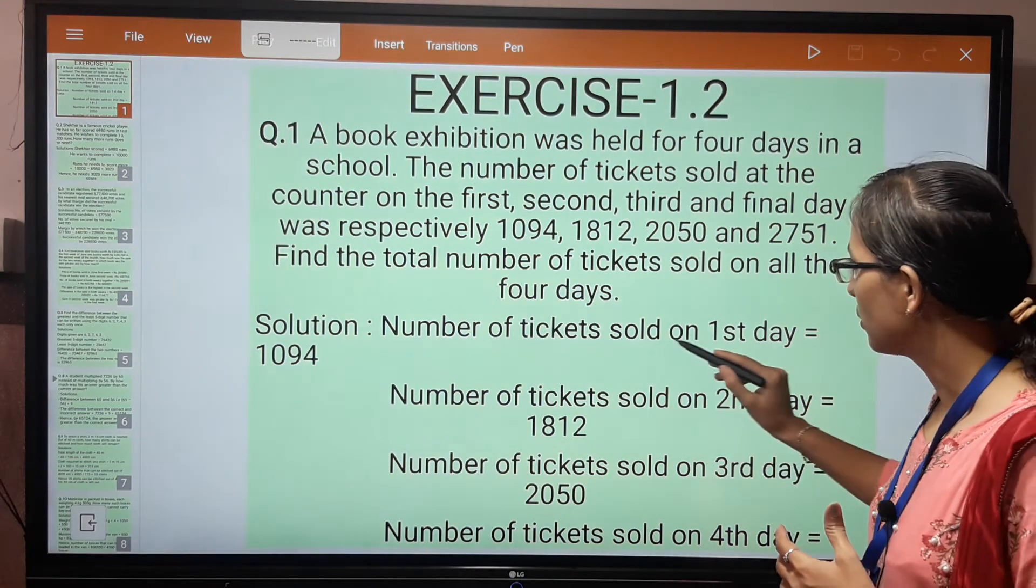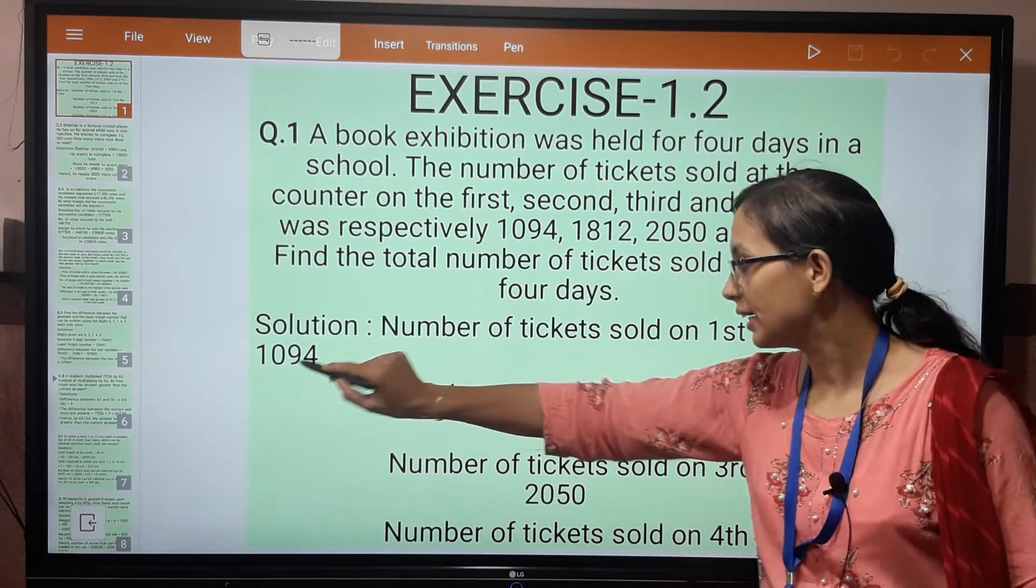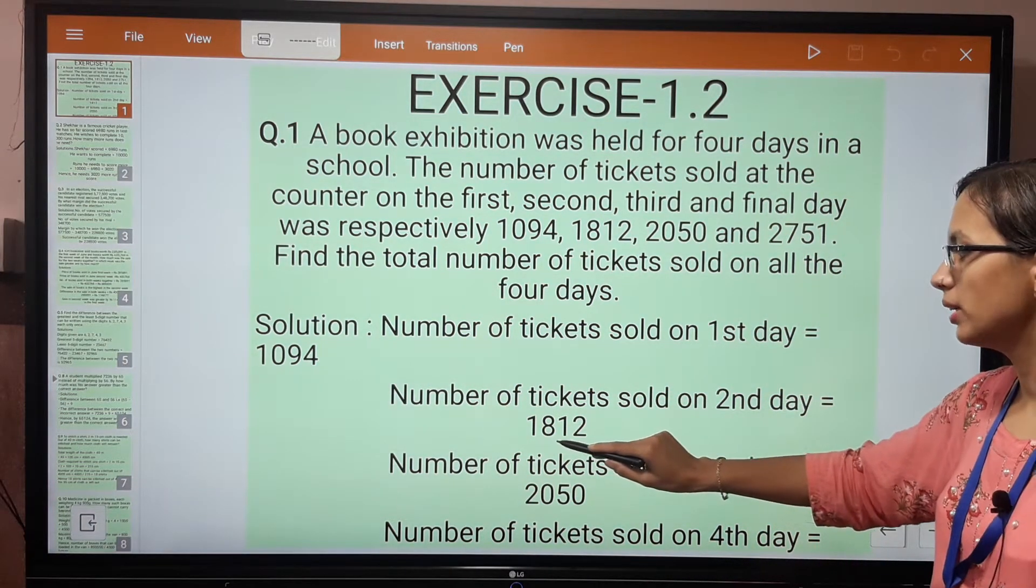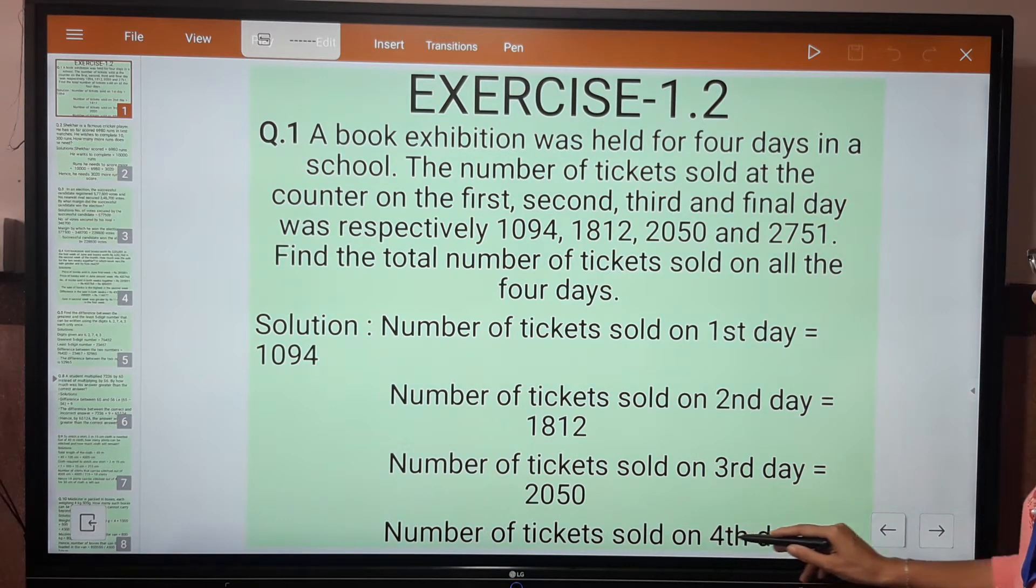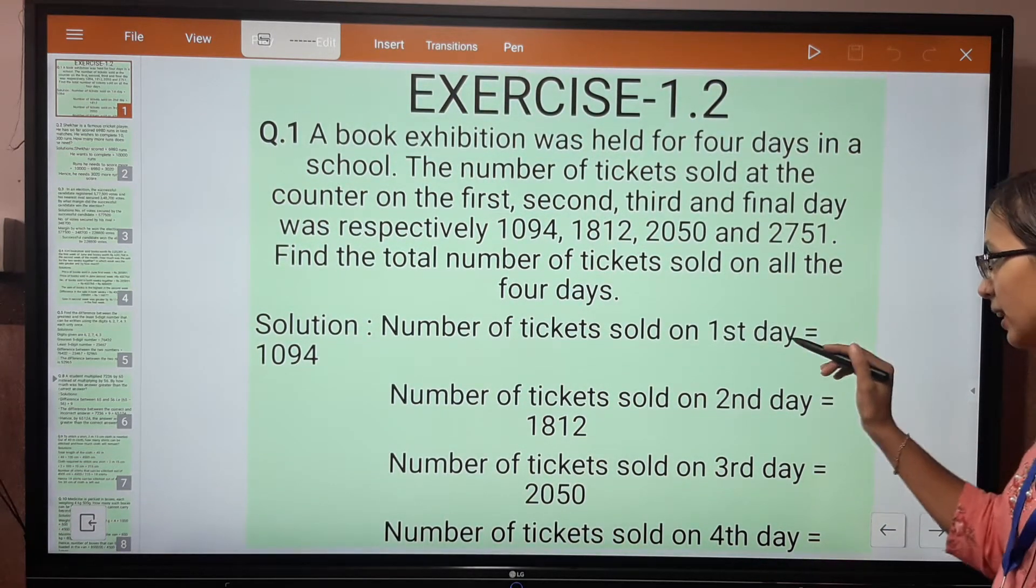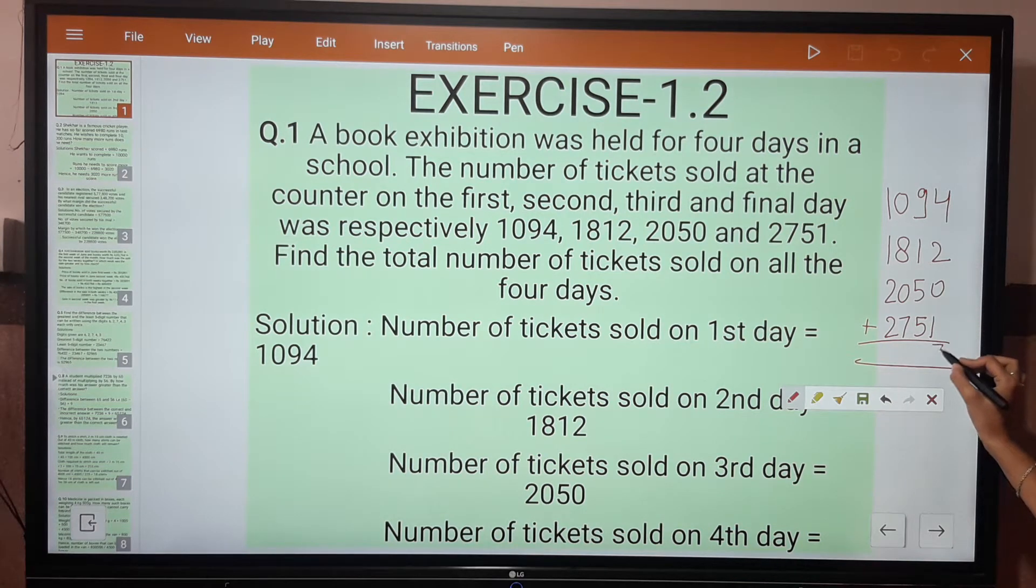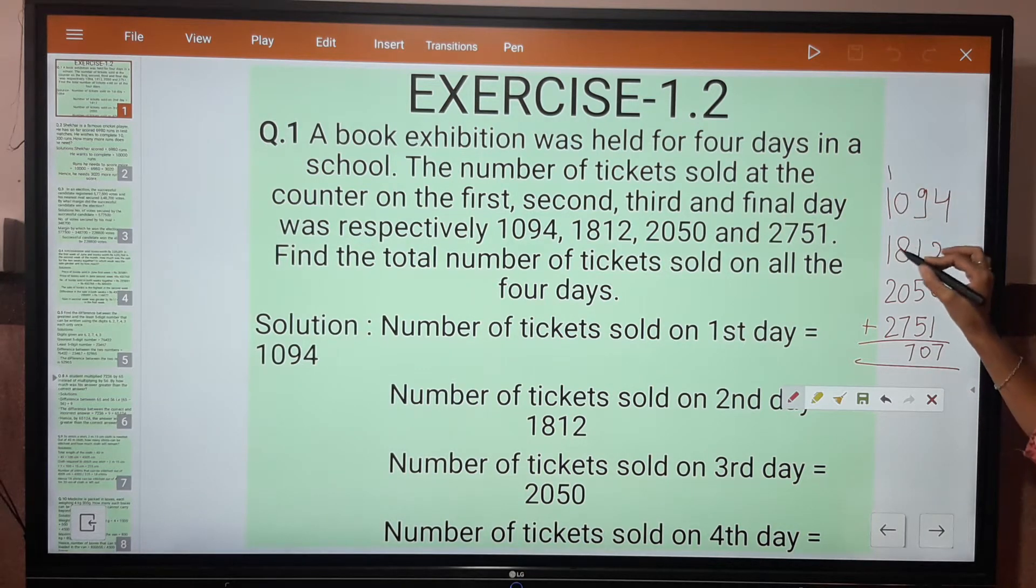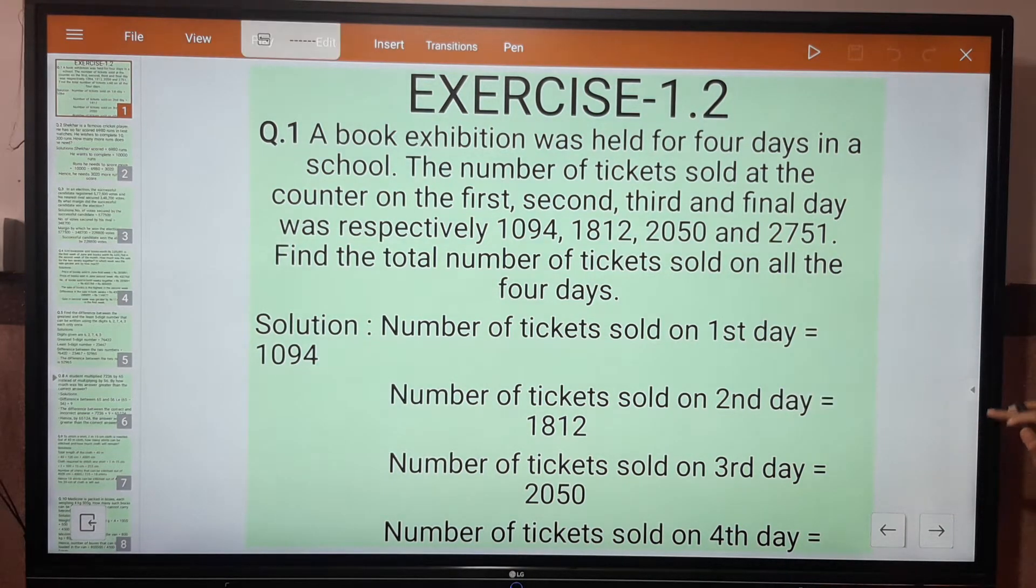Number of tickets sold on first day is 1094. Number of tickets sold on second day is 1812. Number of tickets sold on third day is 2050, and number of tickets sold on fourth day is 2751. You have to add these numbers: 4 plus 2 is 6, plus 1 is 7, 9 plus 1 is 10, plus 5 is 15, plus 10 is 20, carry over 2. 2 plus 8 is 10, plus 7 is 17, carry over 1. Hence the correct answer is 7707.